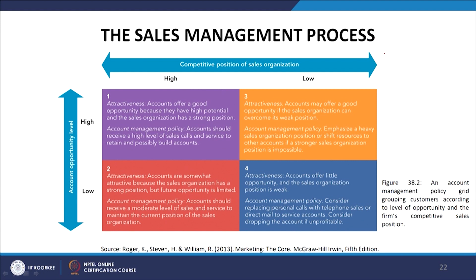On this grid, the competitive position of the sales organization varies from high to low, and the account opportunity level also varies from high to low, creating four cells. In cell 1 — attractiveness: accounts offer a good opportunity because they have high potential and the sales organization has a strong position. Account management policy: accounts should receive a high level of sales calls and service to retain and possibly build the account.